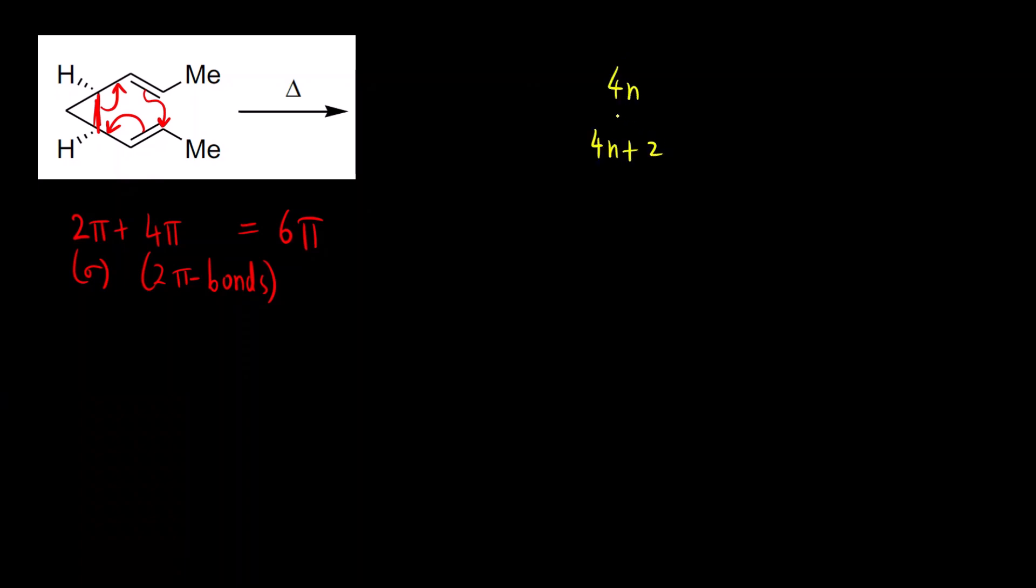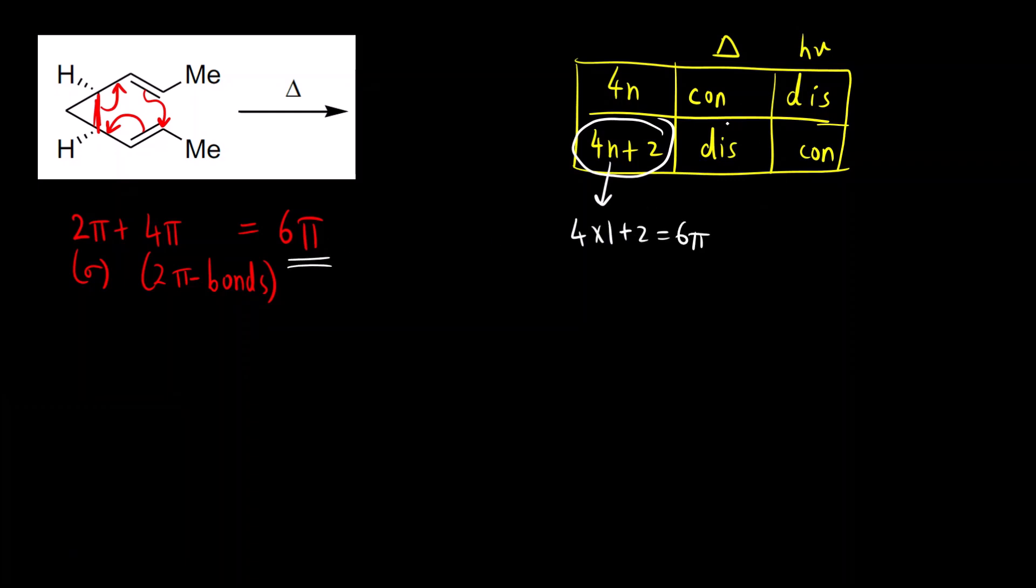We will draw the table: 4n, 4n+2, thermal condition and photochemical condition. Remember alphabetical order C D, that is conrotatory, disrotatory, then reverse: disrotatory, conrotatory. Here, which system we are considering? We are considering four n plus two system, that is if I substitute n equals one, I will get six pi electrons, that is what is present. It is disrotatory, D for disrotatory. The trick is D for don't change the stereochemistry.